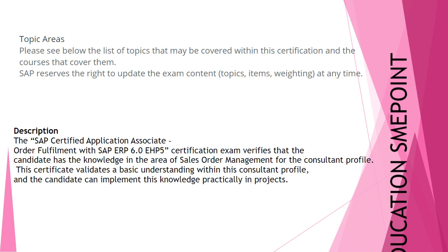Description: The SAP Certified Application Associate – Order Fulfillment with SAP ERP 6.0 EHP 5 certification exam verifies that the candidate has the knowledge in the area of sales order management for the consultant profile. This certificate validates a basic understanding within this consultant profile, and the candidate can implement this knowledge practically in projects.